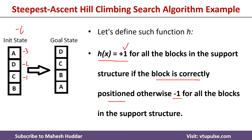Similarly, on the goal state everything is correctly placed. For a, there is no support structure. For b, it is correctly placed, so it is plus 1. For c, both blocks in its support structure are correctly placed, giving plus 2. For d, all three are correctly placed, giving plus 3. Adding all together gives plus 6. So we have to go from minus 6 to plus 6.